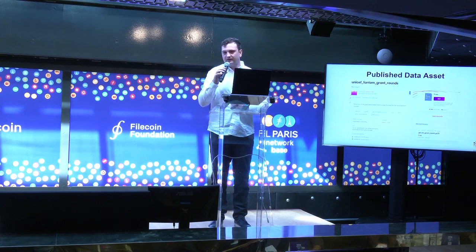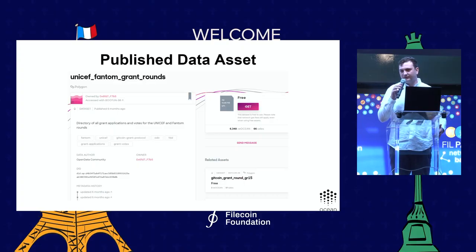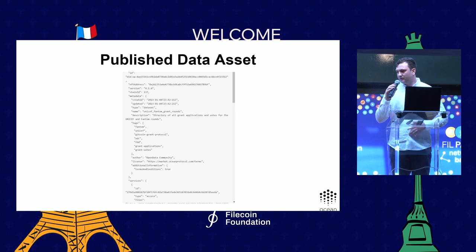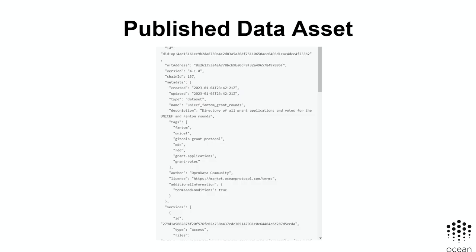You can make the asset free — which allows for provenance tracking of who accessed it — or set a price. Under the hood, when you tokenize an asset, it's not just a simple link. You have all this information tied immutably on-chain: the record of who owns this asset, who is allowed to access it, what services are tied to it, and what custom parameters are needed to make full use of it.